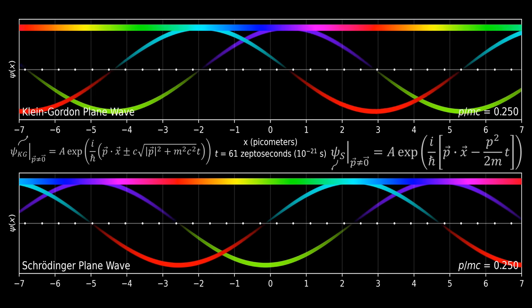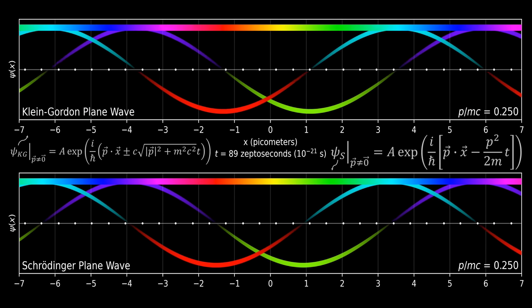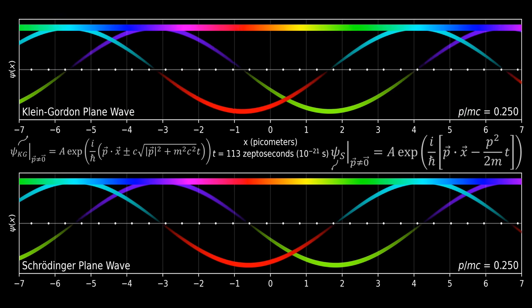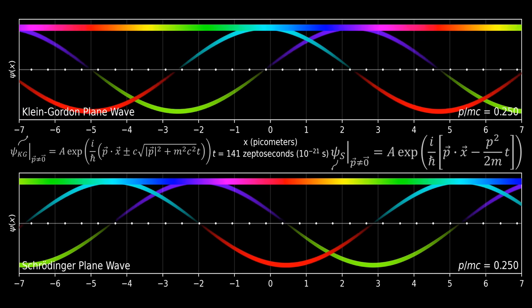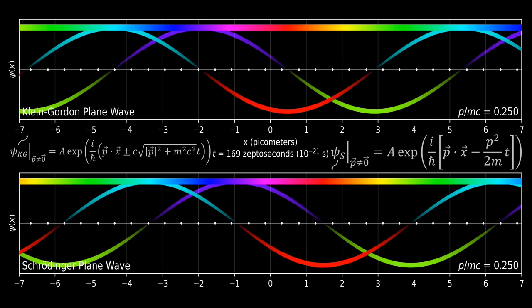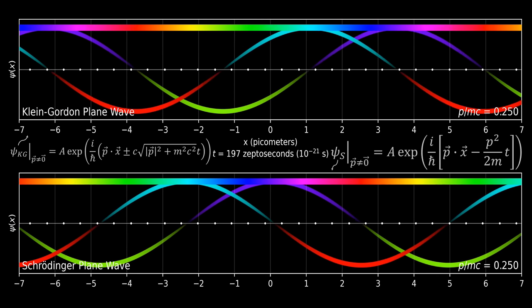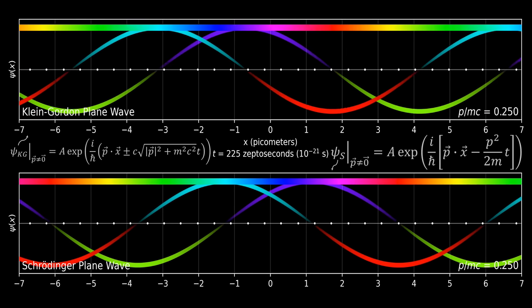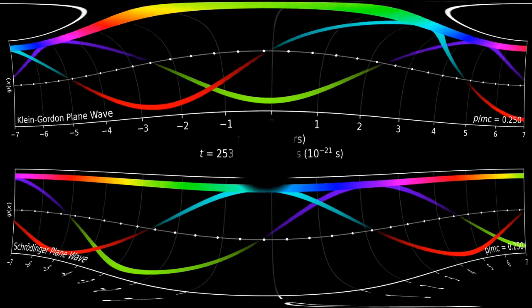As we put the Klein-Gordon plane wave in motion, it goes way faster than the speed of light. The white dots in the chart represent the speed of light, and the wave propagates super fast. But this doesn't violate relativity. When you're looking at an energy-momentum eigenstate, you precisely know the particle's energy and momentum, so you don't know its position at all. It's not correct to take the speed of the phase propagation as the speed of the particle — that's the phase velocity, not the group velocity.